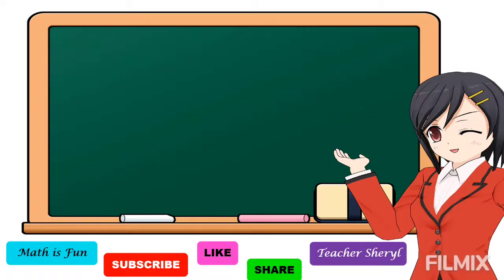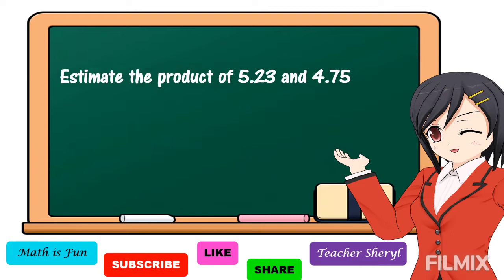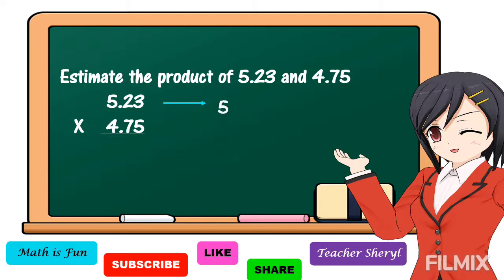Let's study some examples. Estimate the product of 5 and 23 hundredths and 4 and 75 hundredths. To get the answer, first we're going to round the factors to the nearest whole number before multiplying. So if we're going to round 5 and 23 hundredths to the nearest whole number — this number is closer to 5 or closer to 6? All right, 5 and 23 hundredths is closer to 5.